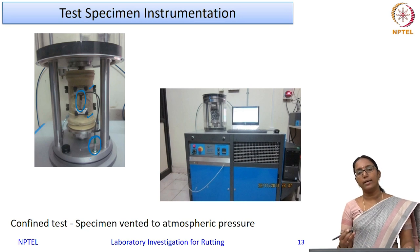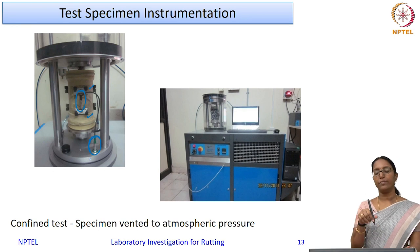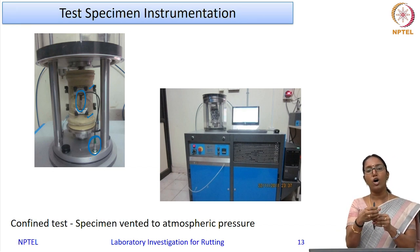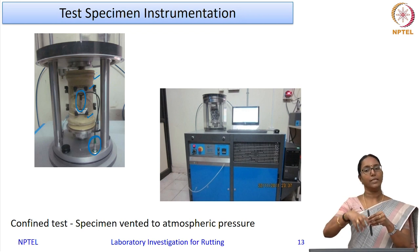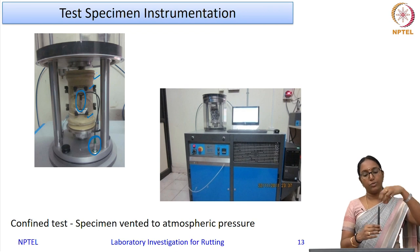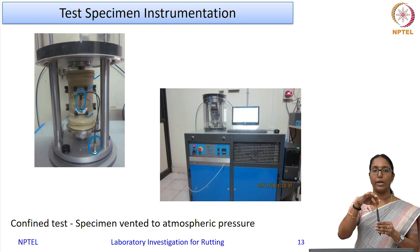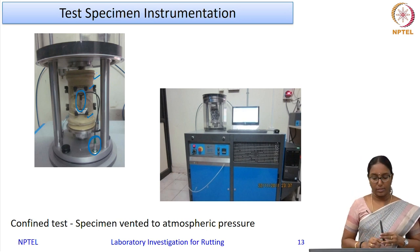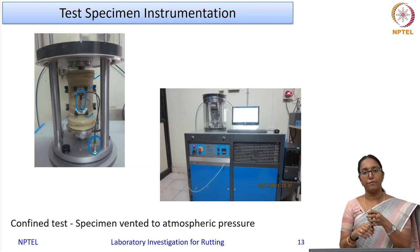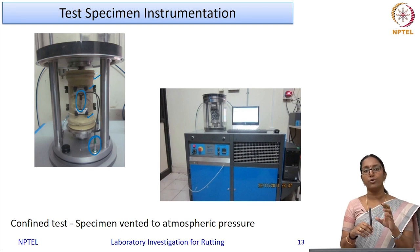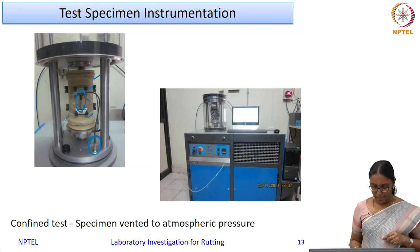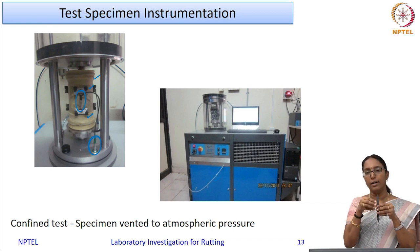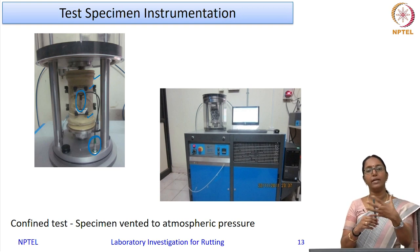For the confined test, a confining pressure is applied from all around the specimen. Since the specimen contains internal air voids, it must be covered with a rubber membrane. The membrane is attached to both the top and bottom platens and sealed with O-rings to prevent leakage. A venting pipe is used to maintain atmospheric pressure inside the voids of the specimen while the external confining pressure is applied from all around.